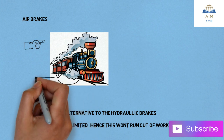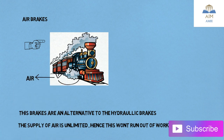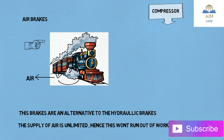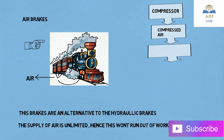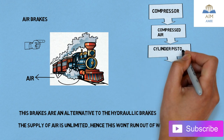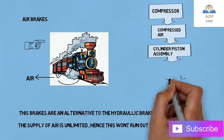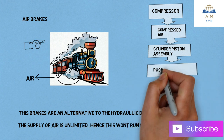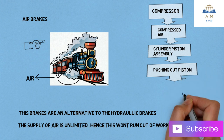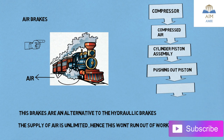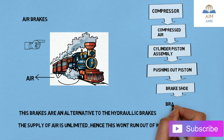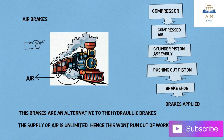Let's check out how the air brakes work in an automobile or in railways. In railways, the main engine has a compressor connected to it. The main function of the compressor is to compress the air drawn from the outside. That compressed air is then transferred to the cylinder-piston assembly. Inside the assembly, the compressed air forces the piston downwards, which results in the expansion of the brake shoe. As the brake shoe expands, the vehicle gets stopped — that's how the air brake works.